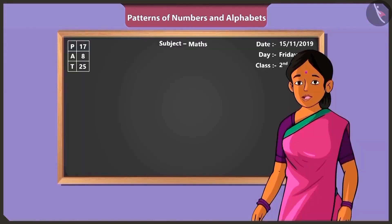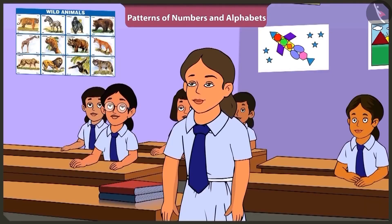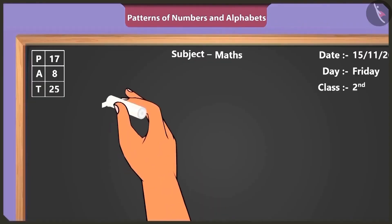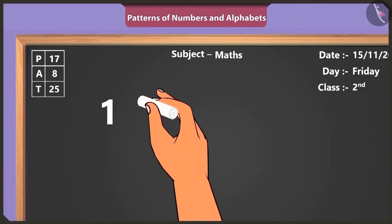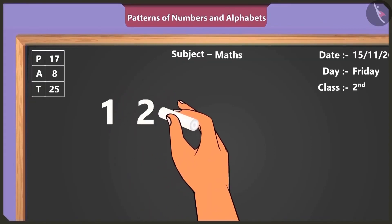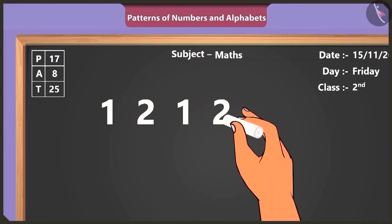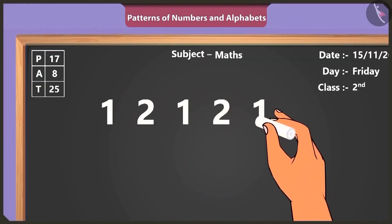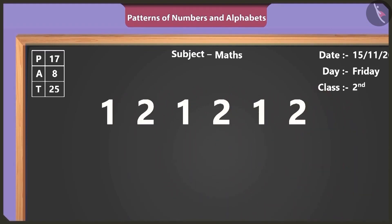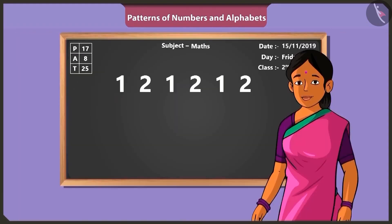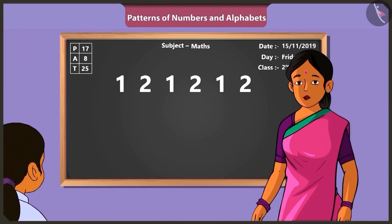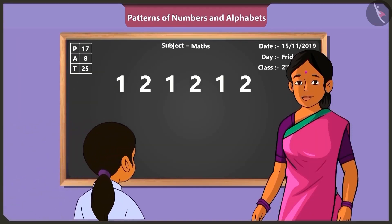How many times did I clap? I heard one clap first, then two claps. And this continued: one, two, one, two. Well done. Vinny, now you come forward and count my claps.